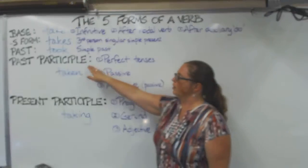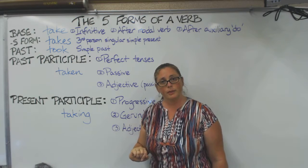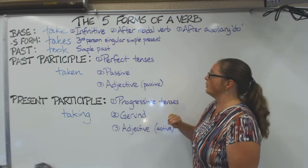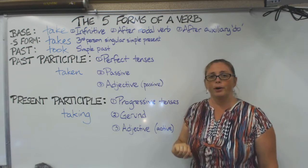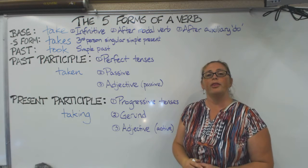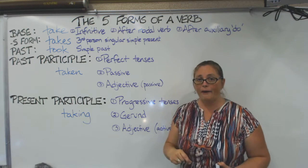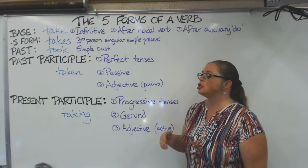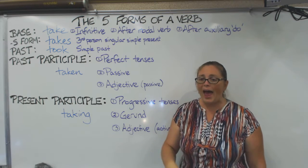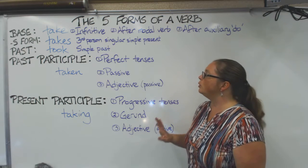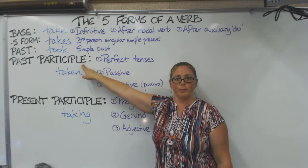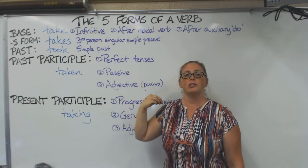The ones we will focus on the most here are the past participle and the present participle. For the past participle, there are three uses. The first is as a perfect tense marker — we use the past participle with the auxiliary verb 'have' to form the perfect tenses. For example: 'She has taken this test already.' 'She had already taken the test.'